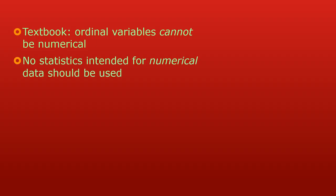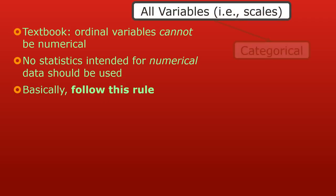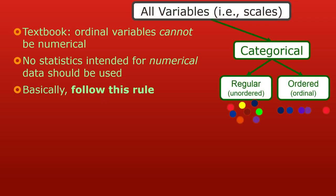In the textbook you'll read that ordinal variables cannot be numerical, and that there are no statistics intended for numerical data that you should ever use with an ordinal or ordered categorical scale. I'm just telling you — follow this rule, even though in reality not everybody always does and sometimes there are reasons to break it, but you don't know much about that right now. If you see a Likert scale item, just one by itself, do not calculate a mean or standard deviation on it. Don't make a histogram or scatter plot out of it. These things should not be used as if they were numerical scales.